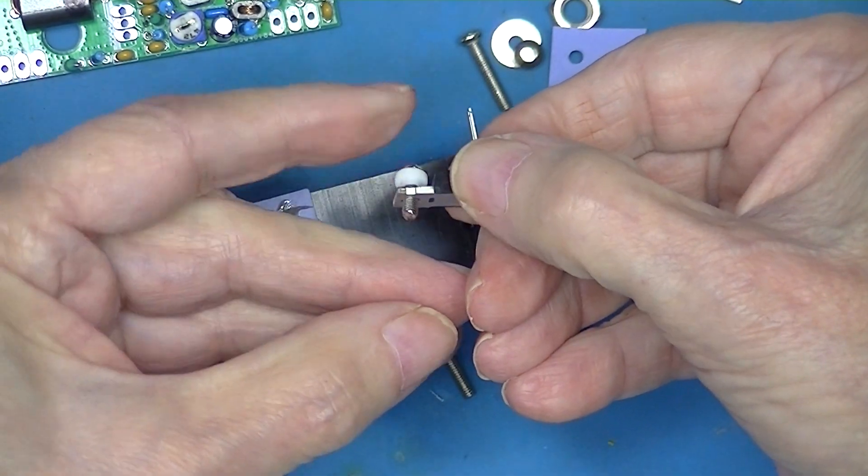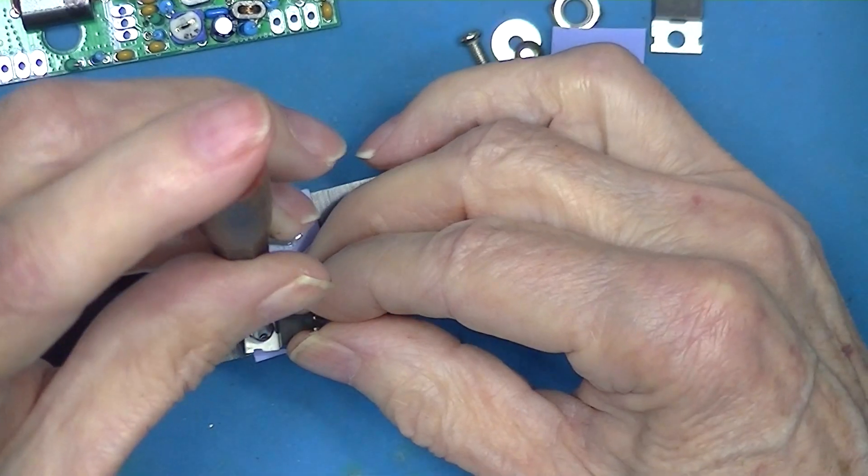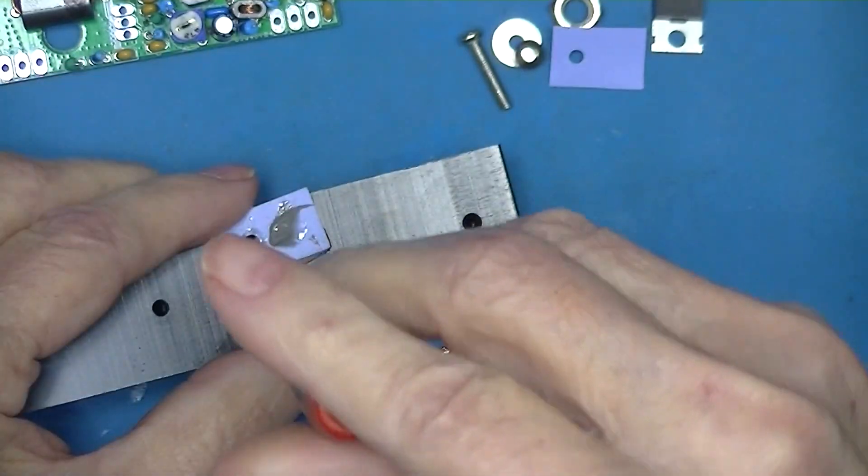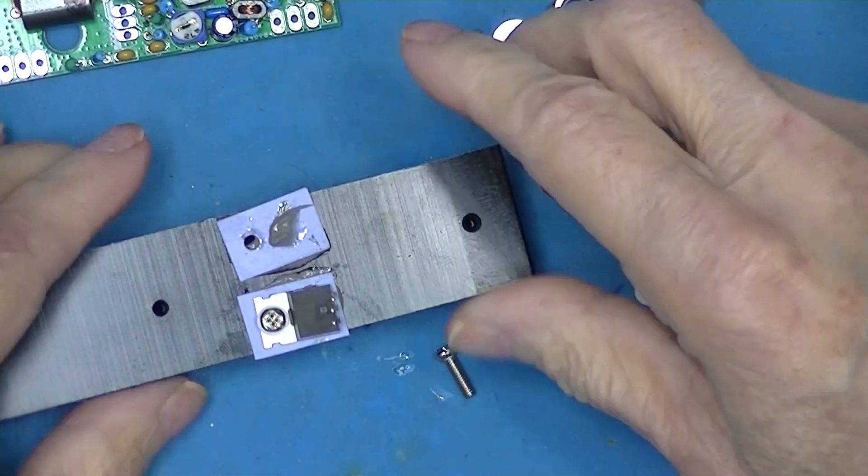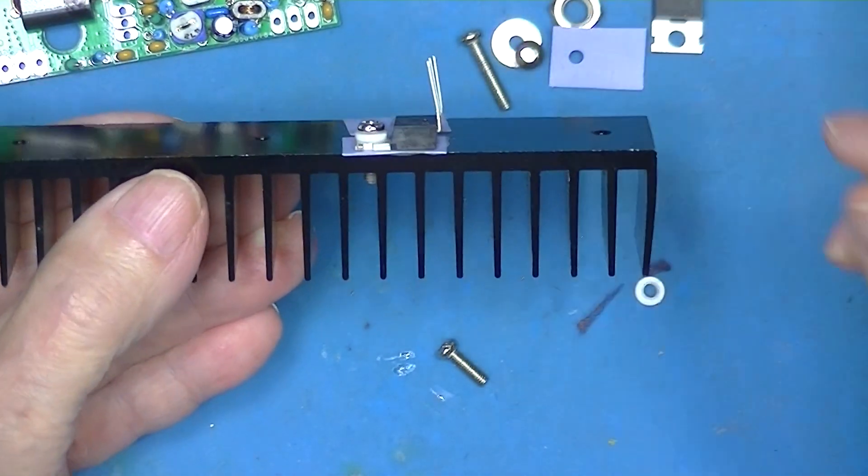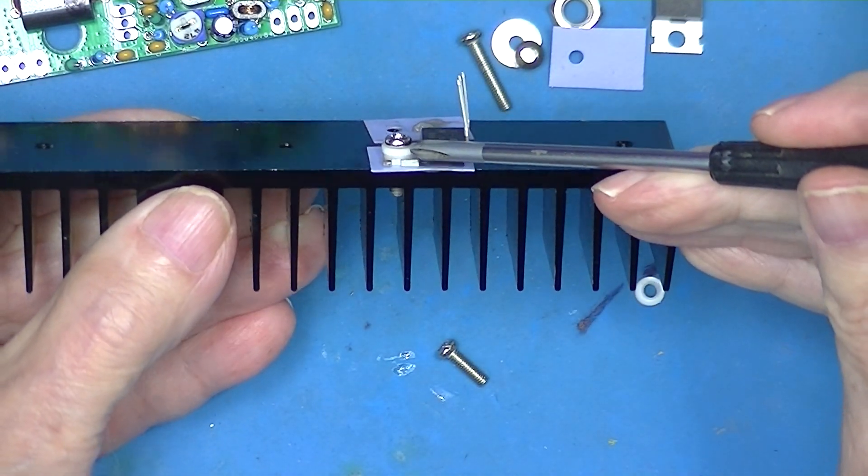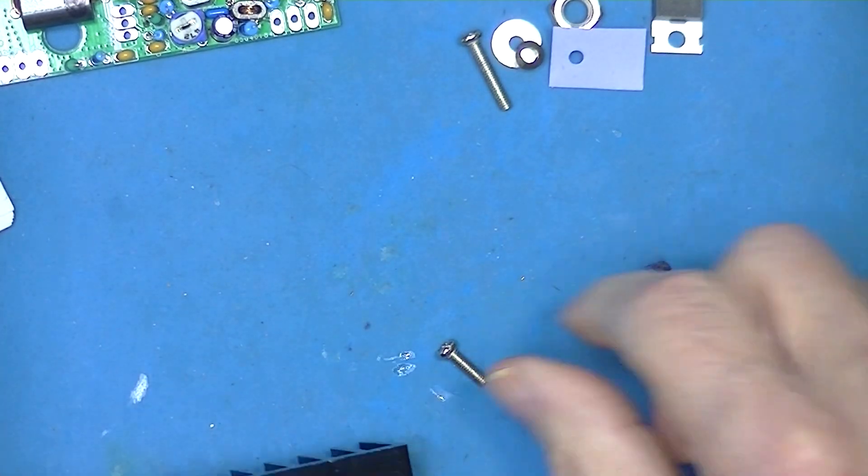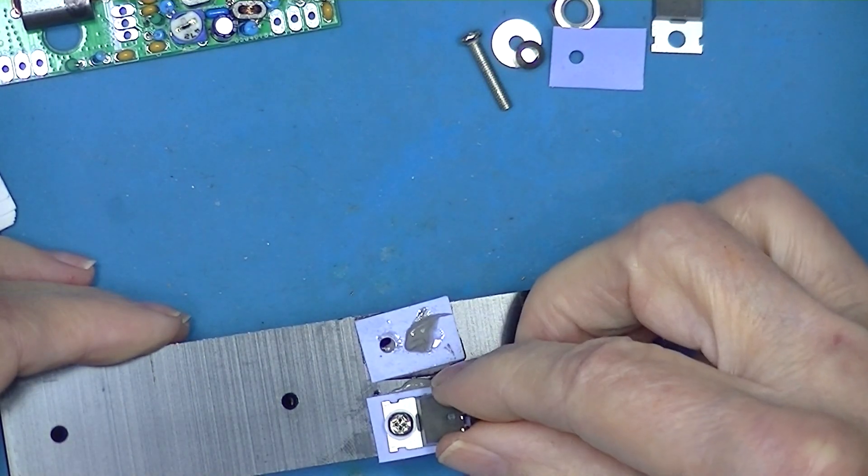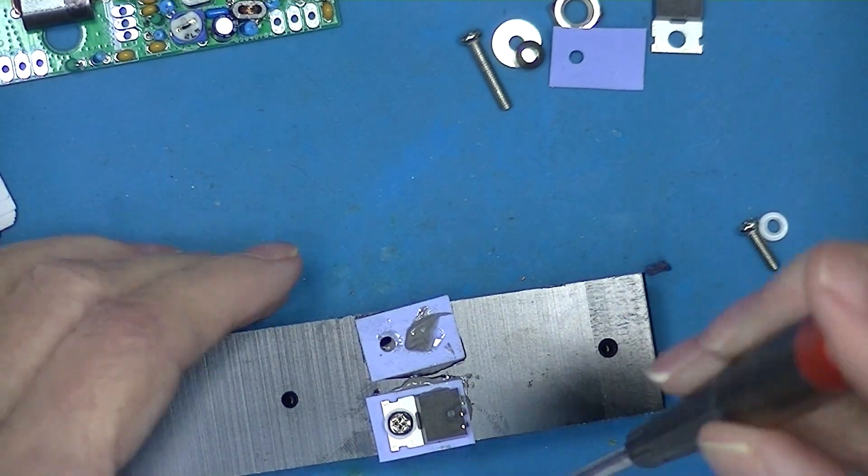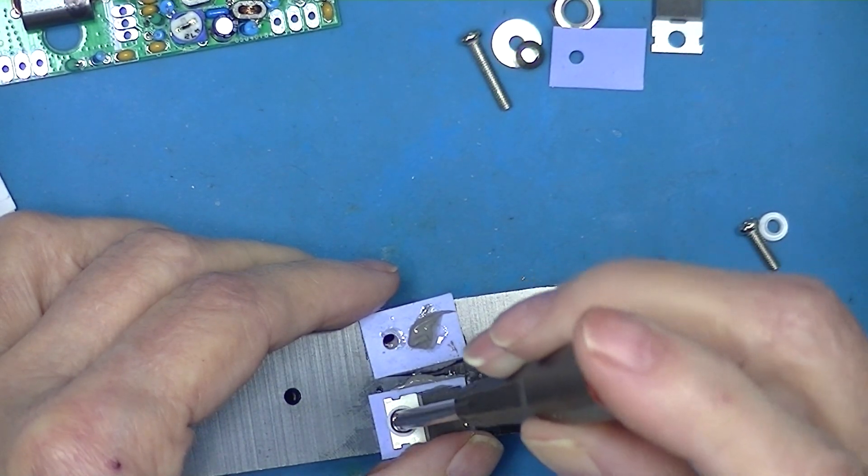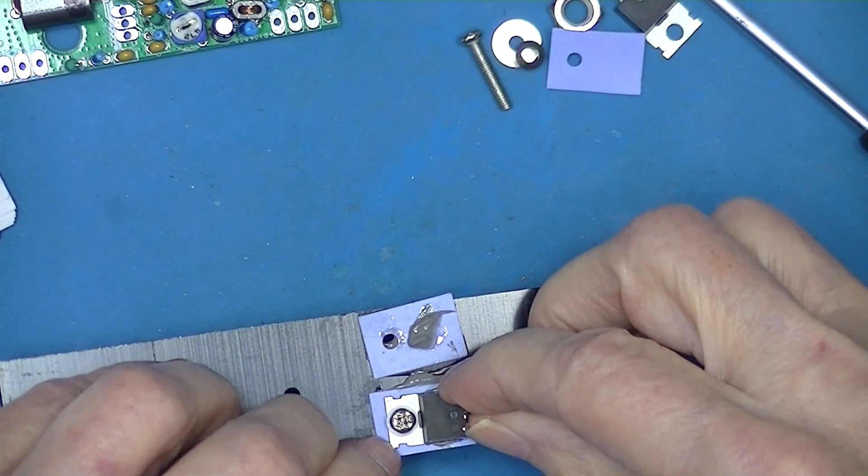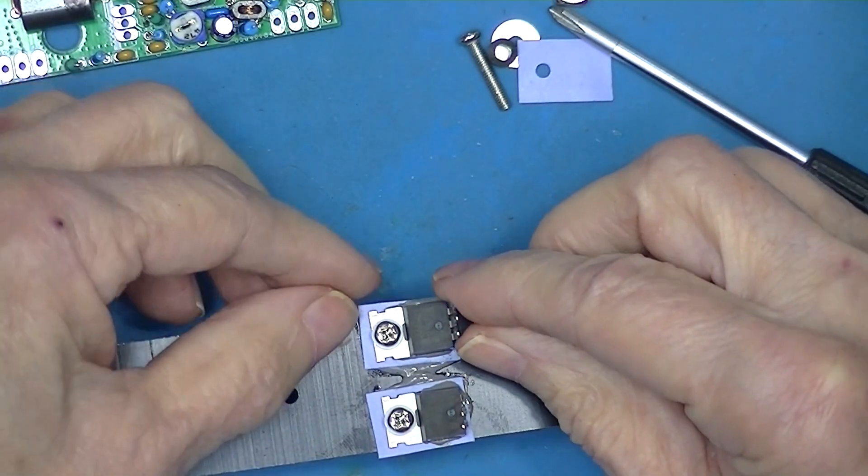We have the screw and the insulating washer and make sure the insulating washer is centered on the hole. It is down tightly against the transistor. I'm not going to make it real tight. I want it sort of snug but still able to move.